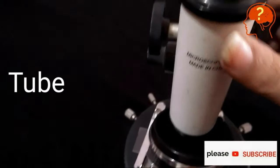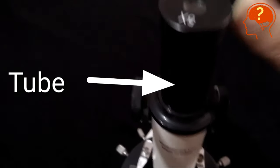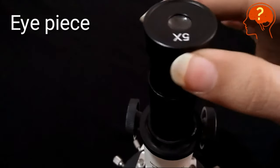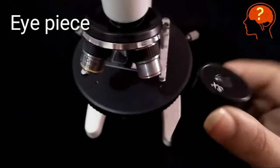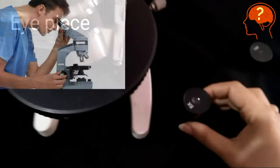This structure is called the tube that connects the eyepiece and objective. This is the eyepiece, the lens through which we see the specimen.